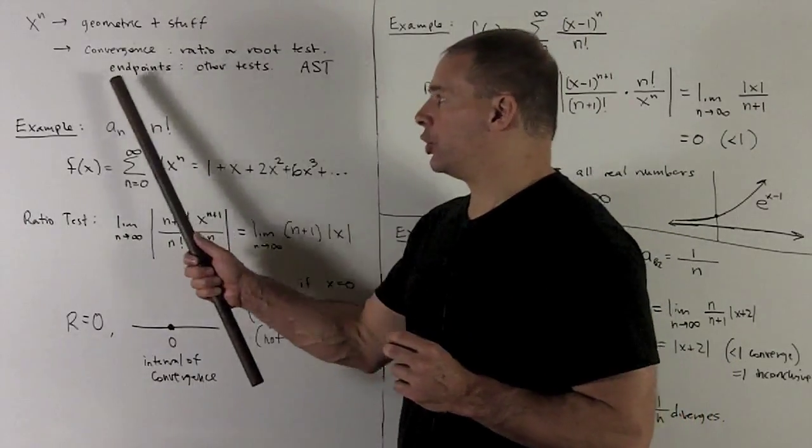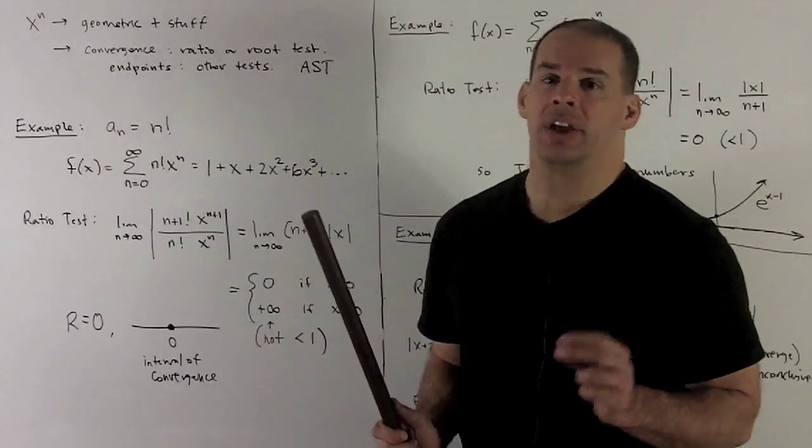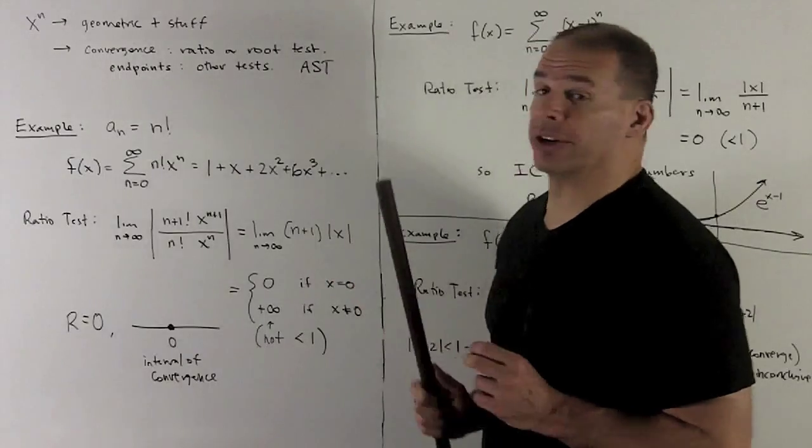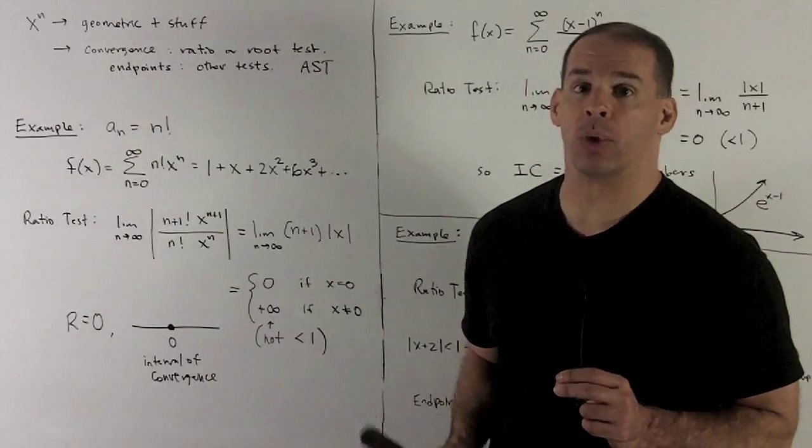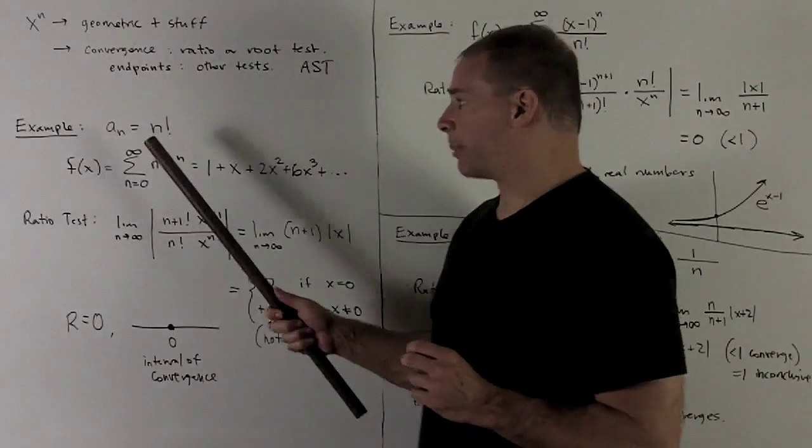For the endpoints, you're usually going to need to go to some other test. You're often going to need alternating series test. So we'll see that in one of the examples. All right, first example.